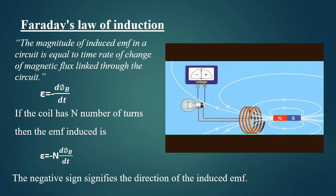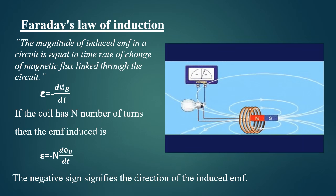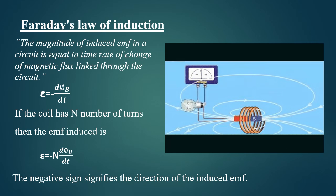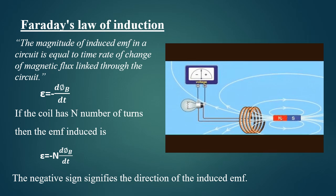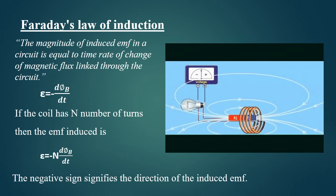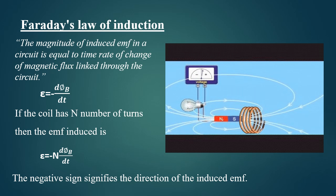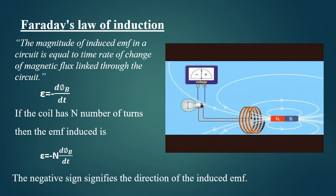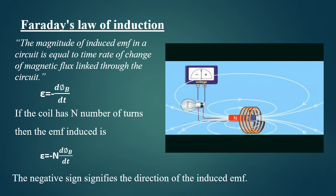If a coil has N turns, then the change in flux associated with each turn is the same. Therefore, total EMF induced in the circuit is given by epsilon equal to minus N d phi b by d t.